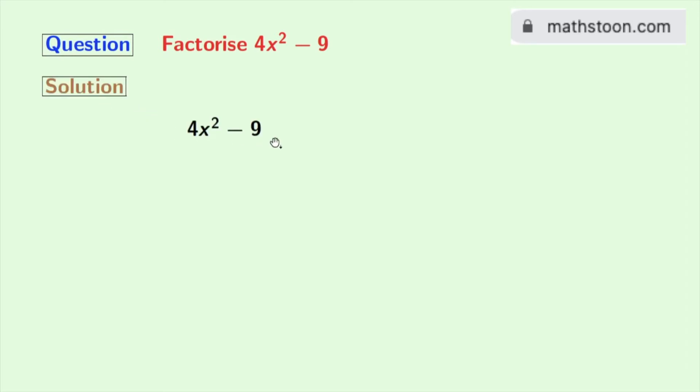Our given expression is 4x square minus 9. We will express each term as the square of something. Doing that, we get 2x whole square minus 3 square.